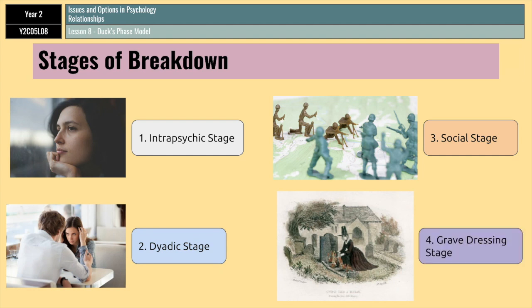The final stage is what's known as the grave dressing stage. This is a point where, having left their partner, both sides start to construct their version of why the relationship broke down. More often than not, that involves minimizing their own faults and maximizing their partner's, while at the same time trying to show themselves as trustworthy and loyal in order to attract a new partner in the future. It's called the grave dressing stage because it signifies the closure of the previous relationship and the readiness to start a new one.